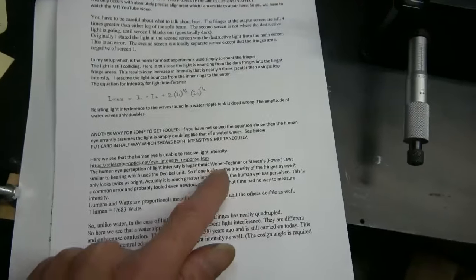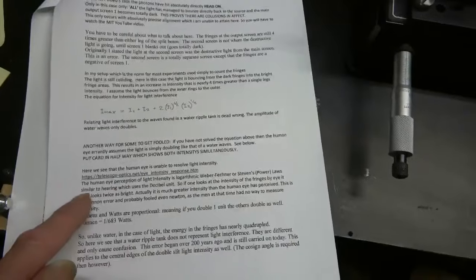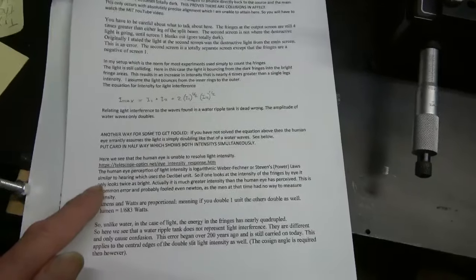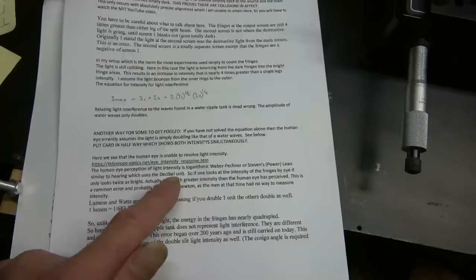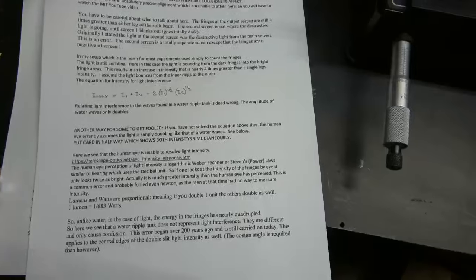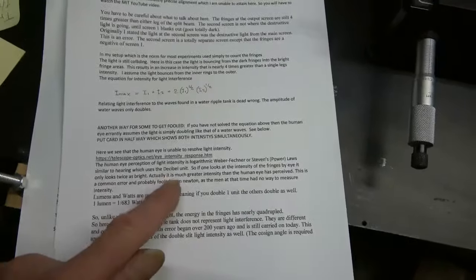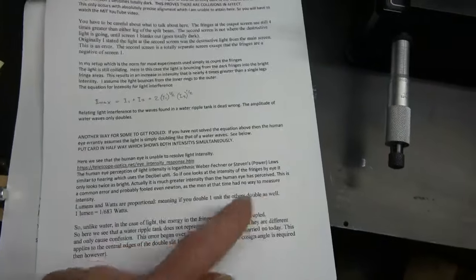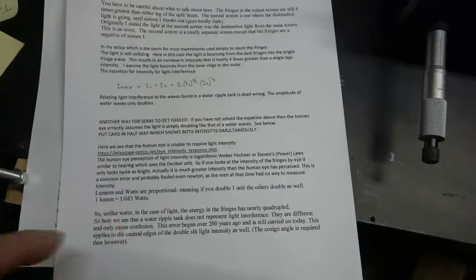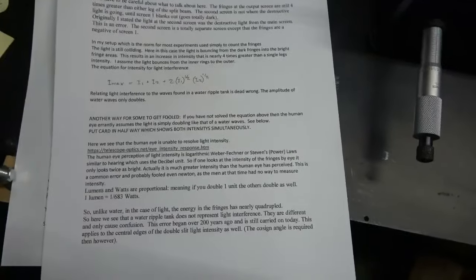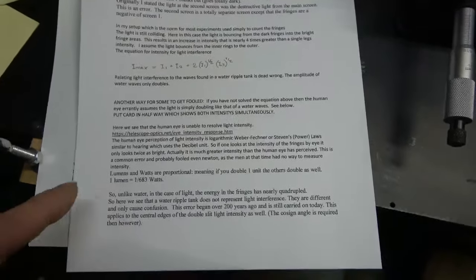The human eye perception of light intensity originally was logarithmic, the Weber-Fechner law. But the upgrade is the Stevens power laws. And it's similar to hearing, the human ear, which uses the decibel unit. It's logarithmic. So if one looks at the intensity of the fringes by eye, it only looks twice as bright. Actually, it's much greater than the human eye has perceived. This is a common error and probably fooled even Newton. As the men at the time had no way to measure intensity except for the human eye.